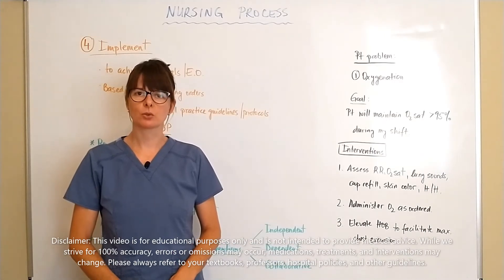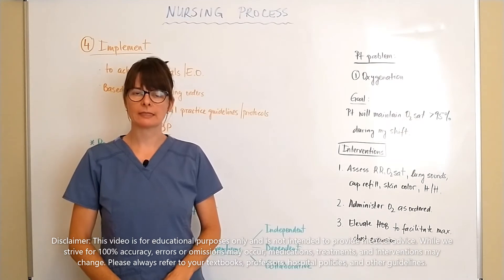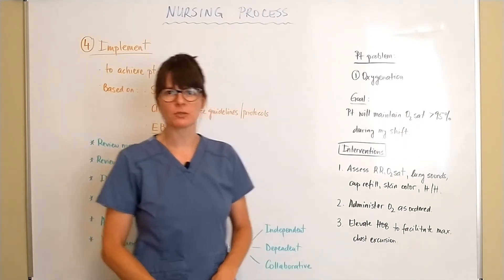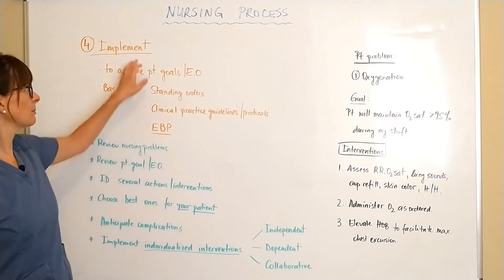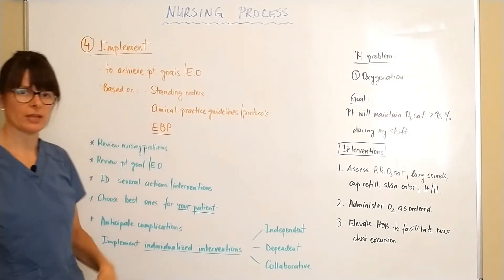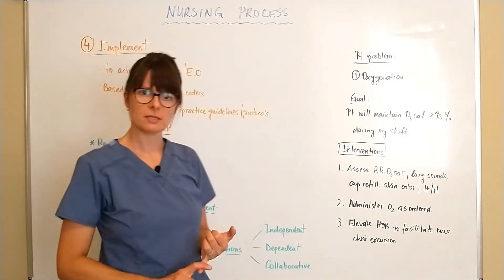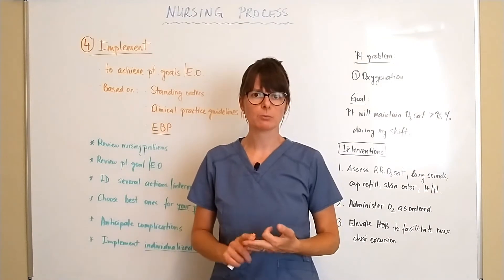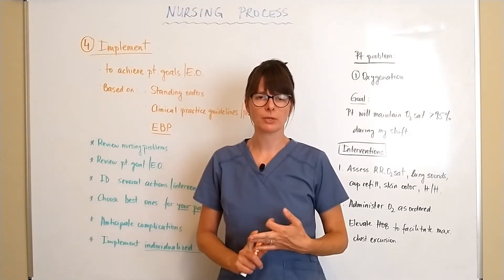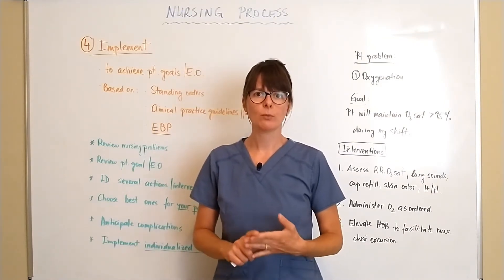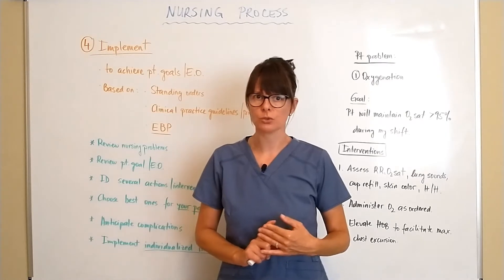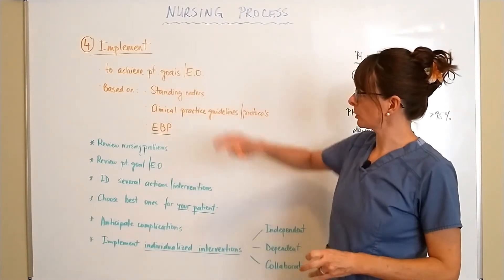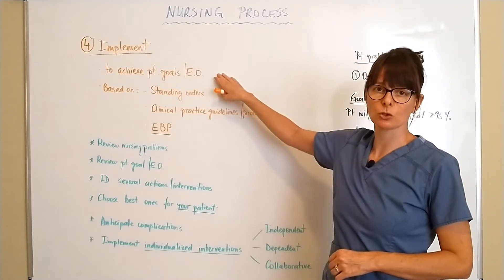Welcome to Nursing School Explained. This video covers the fourth step of the nursing process: the implementation phase. At this point, we have assessed our patient, come up with our problem list and prioritized appropriately, and established our patient goals. Now we are going to work to achieve those patient goals and expected outcomes.